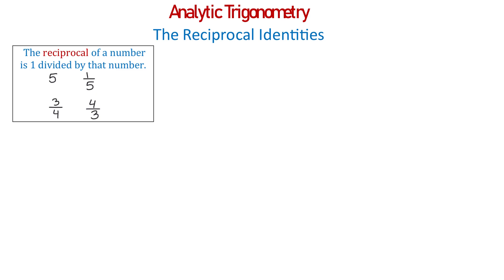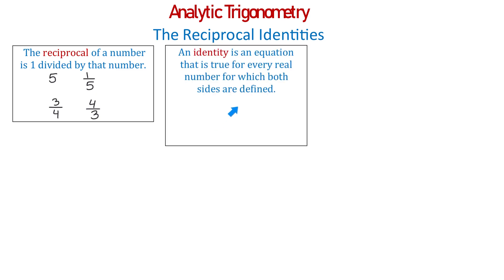What is an identity? An identity is an equation that is true for every real number for which both sides are defined. An example of an identity is x plus 4 equals x plus 4. This equation is satisfied by any real number, so any number we use in place of x will make both sides of this equation equal. Another example of an identity is x over x equals 1. This equation is true for any real number except 0.